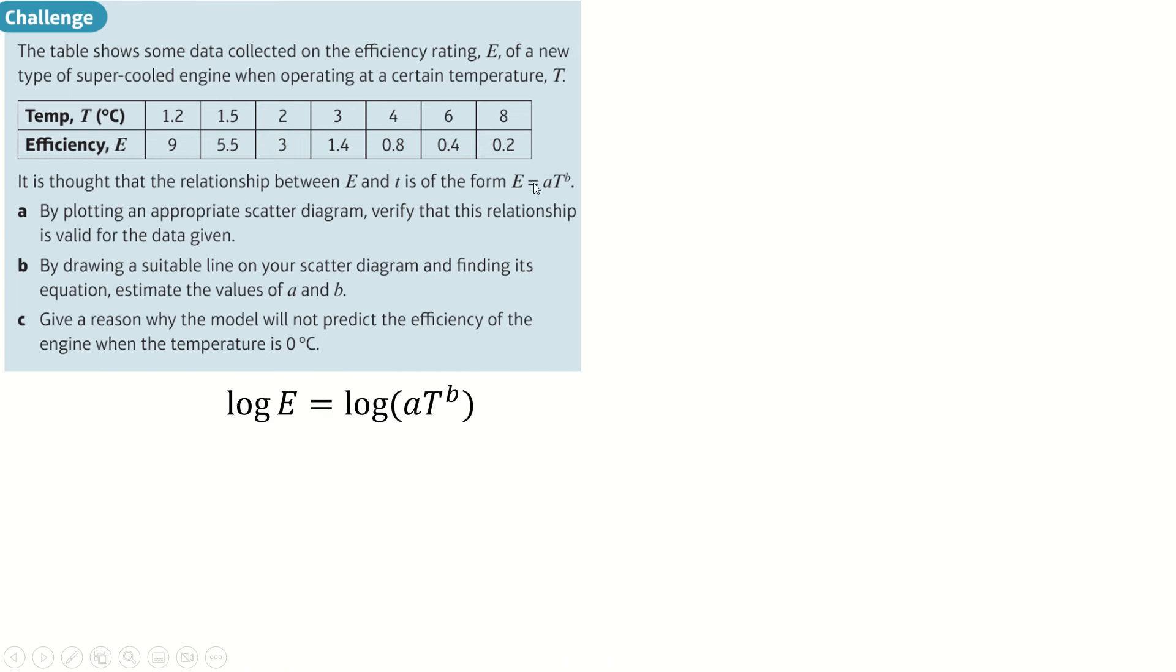You take log of both sides here, and then this is A times T to the B, so the log separates to log of A plus log of T to the B, then the B can come down. And now this is a Y equals MX plus C line, as long as this is your Y, and log T is your X, because T is the variable. So M is B, the gradient, and log A, the Y intercept.